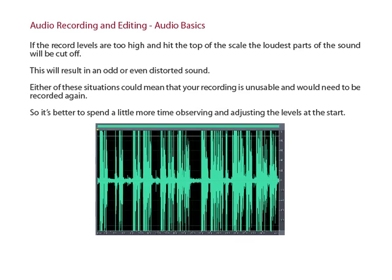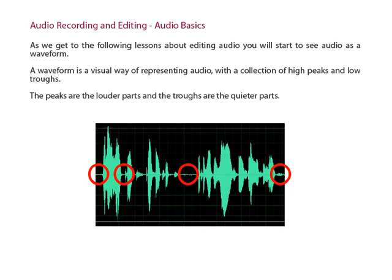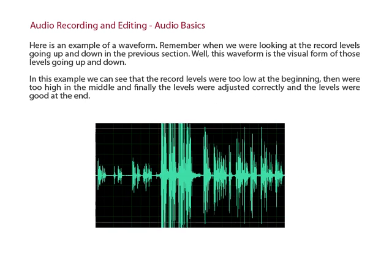So it's better to spend a little bit more time observing and adjusting the levels at the start. As we get to the following lessons about audio editing, you will start to see audio as a waveform. A waveform is a visual way of representing audio with a collection of high peaks and low troughs. The peaks are the louder parts and the troughs are the quiet parts. Here is an example of a waveform. This waveform is the visual form of those levels going up and down.